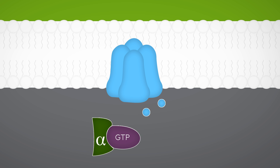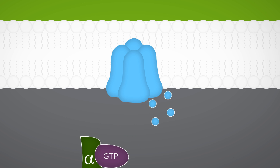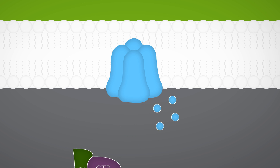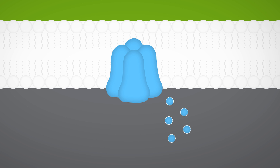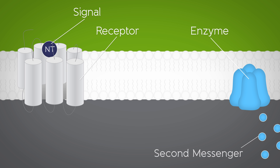These so-called second messenger pathways can lead to a number of possible changes inside the cell. This is perhaps the main difference between ionotropic and metabotropic receptors. While the effects of the GPCR are typically slower than those of the ionotropic receptors, they are much longer lasting.